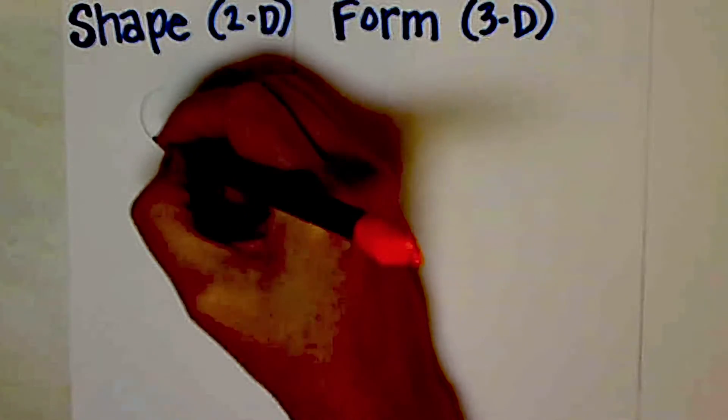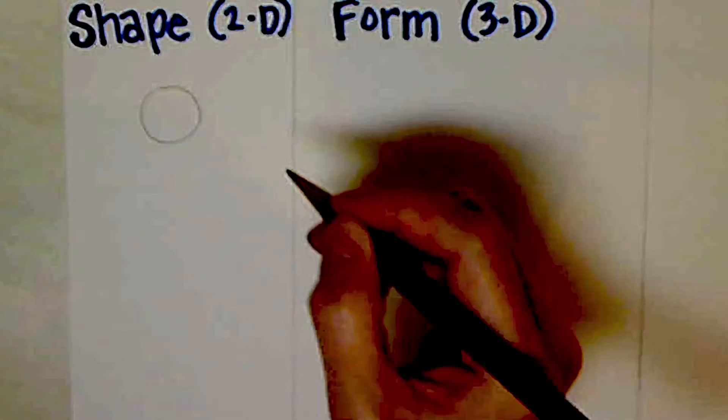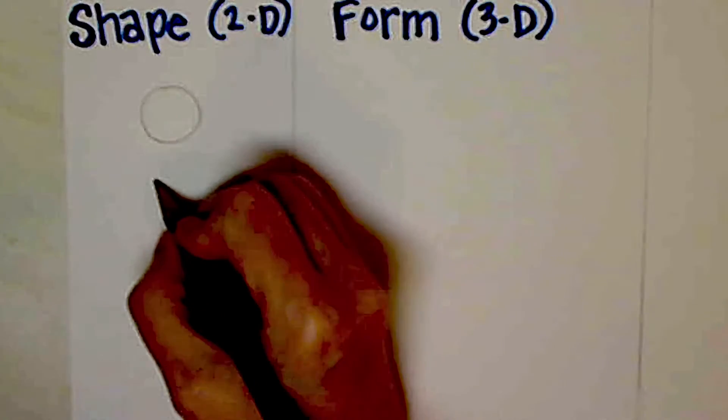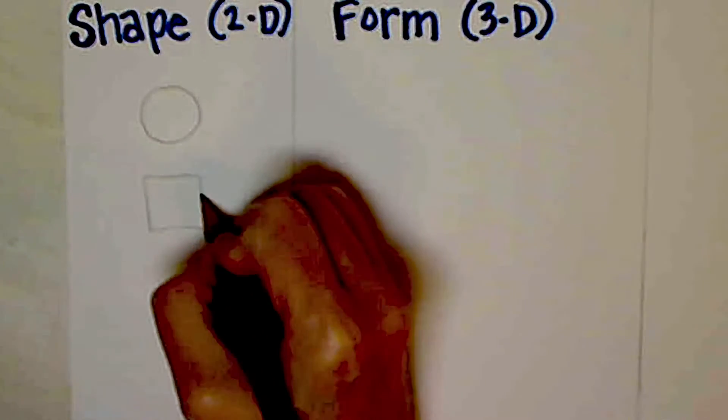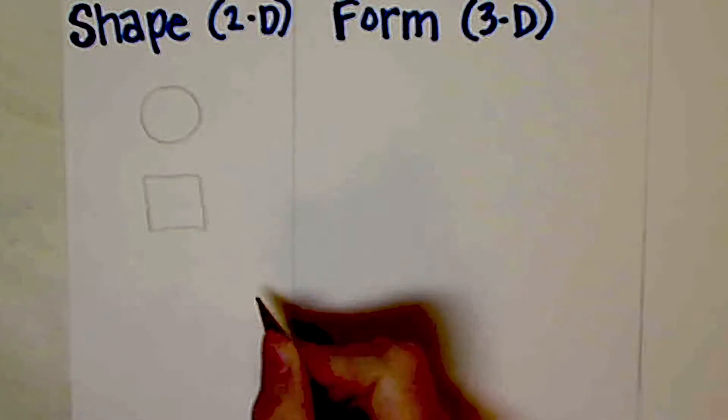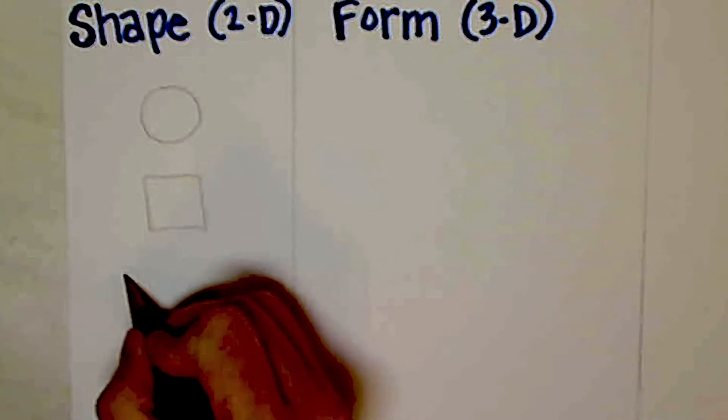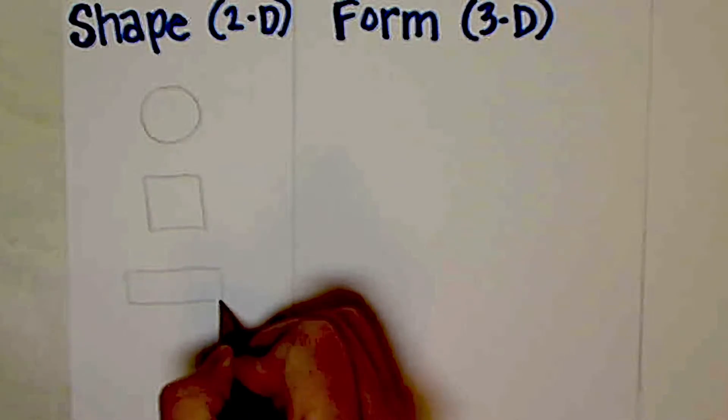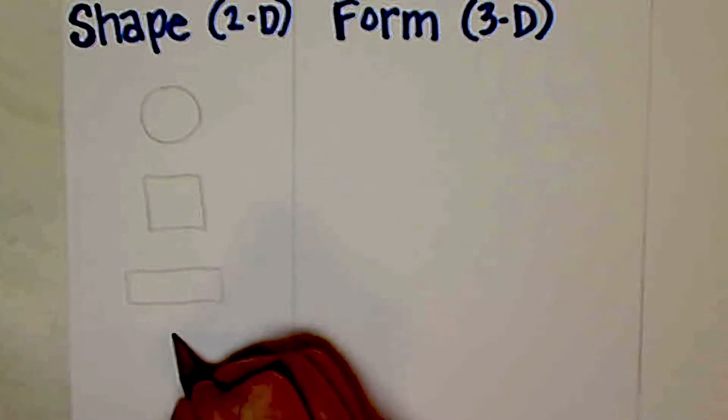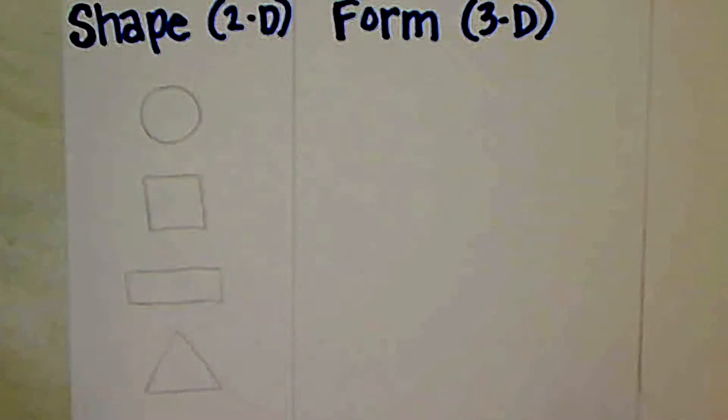So what are shapes? We have circles, what else can you think of? Square, maybe a rectangle, and triangle. So these are our shapes and we are going to transform them into forms.